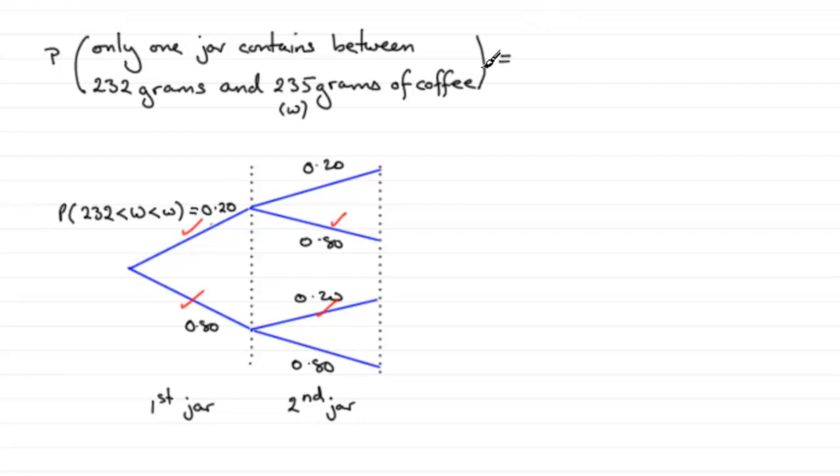So it's going to be, if we take the first route, that we're in the range, 0.20, multiplied by not in the range, 0.80, and then we just repeat it again. Obviously, I could times this by 2, but I'll just put it as 0.80 times 0.20, as we come down through here.